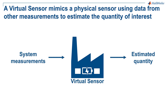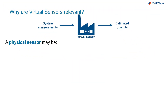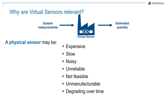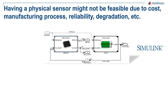A virtual sensor is a type of software that, given the available information, processes what a physical sensor otherwise would. It learns to interpret the relationships between different variables and observes readings from different instruments. The benefits of virtual sensors are that they can be placed anywhere in a system, do not add any weight to a device, and are much cheaper than their physical counterparts.